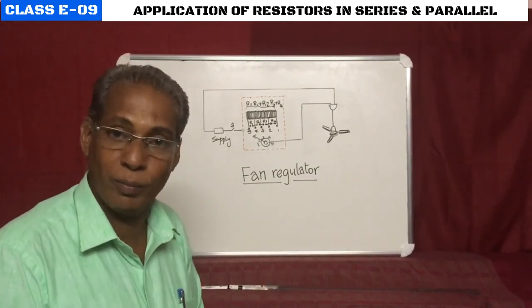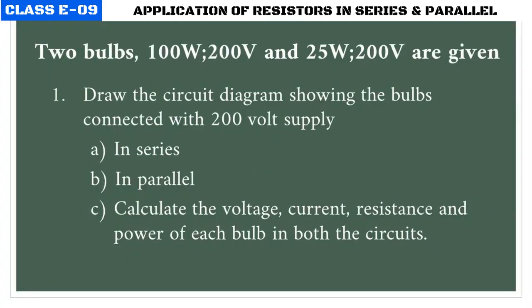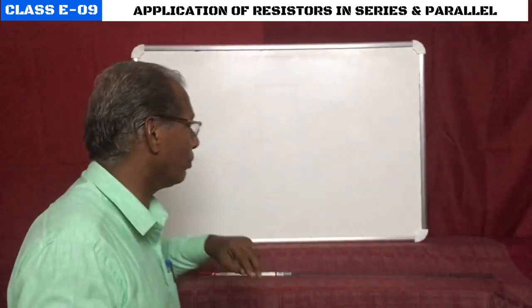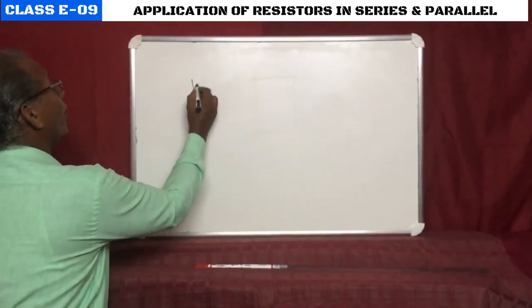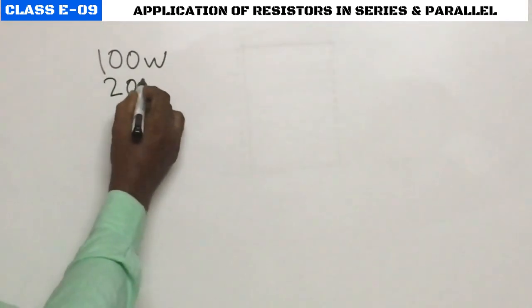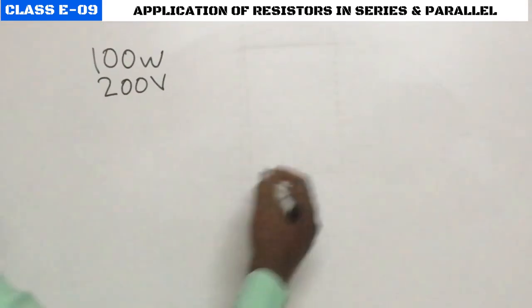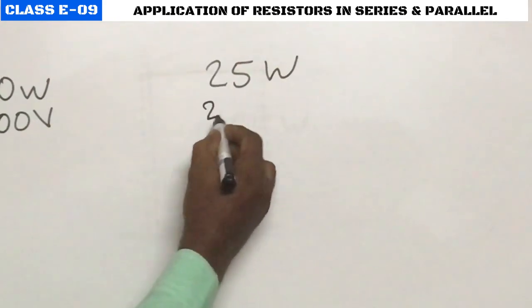Now we do a problem using the principle of series and parallel connections together. The problem: two bulbs — 100 watt, 200 volt, and 25 watt, 200 volt — are given. First, draw the circuit diagram showing the bulbs connected to a 200 volt supply: (a) in series, (b) in parallel. Then calculate the voltage, current, resistance, and power of each bulb in both circuits.